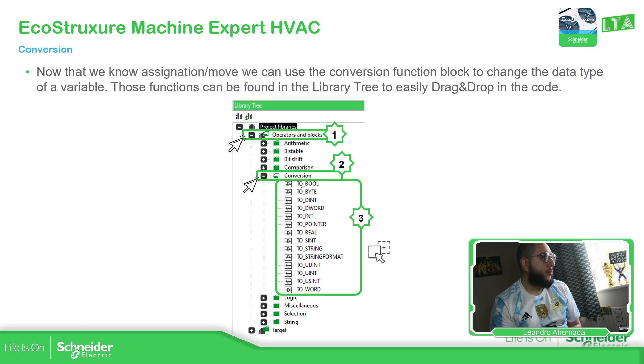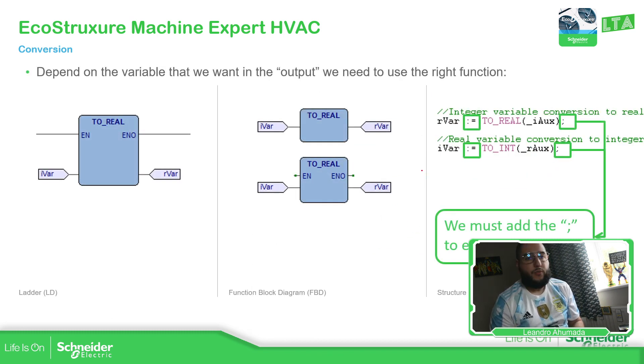You can see everything with two underscore the final value that you want to be converted. So if we have a word variable and I need to convert that to real, convert to real. The function block that I need to use is to real. Because it's the final destination. Now, how does it looks like? So similar to the move, we just drag and drop it into our code. We can see to real here, we have the enable input and output. And here you have the input variable. In my case, I use I bar for integer and R bar for real value. You can see I'm moving this value here to here.